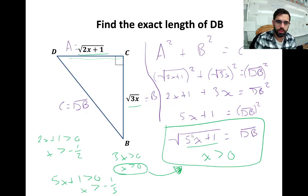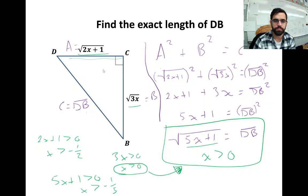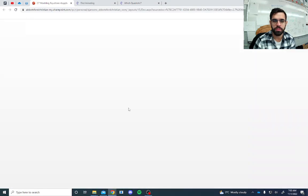Now, triangles — find the exact length of DB. We don't know what x is, so we can't solve for it, but we can write an expression in terms of x. To set up an equation, we'll use the Pythagorean theorem since it's a right triangle. If the two legs are a and b and the hypotenuse is c, then a² + b² = c².